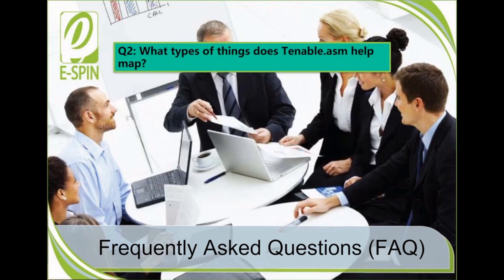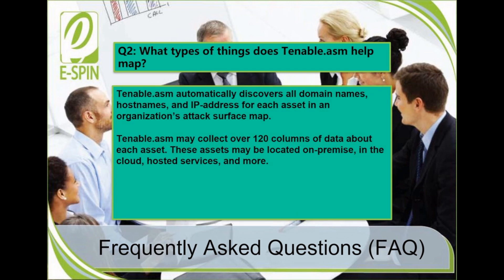Question 2: What types of things does Tenable ASM help map? Tenable ASM automatically discovers all domain names, host names, and IP addresses for each asset in an organization's attack surface map. Tenable ASM may collect over 120 columns of data about each asset. These assets may be located on-premise, in the cloud, in hosted services, and more.